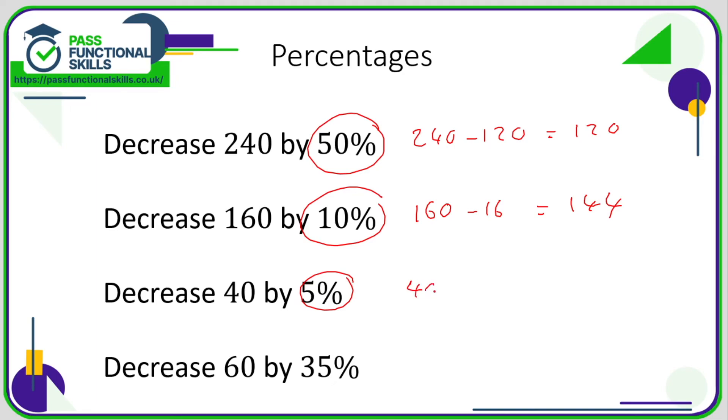Decrease 60 by 35%. Well, 10% is 6, so 30% is 18 and 5% is 3. So 35% is 18 plus 3, which is 21. So the calculation is 60 minus the 21. 60 take away 20 is 40, minus the 1 is 39.